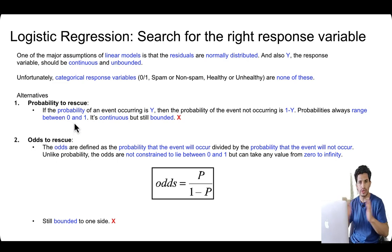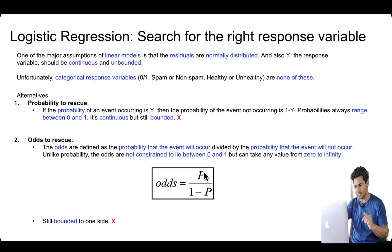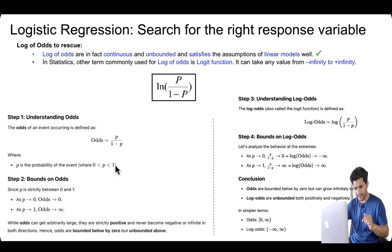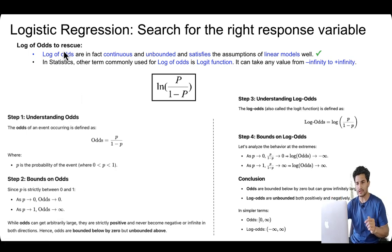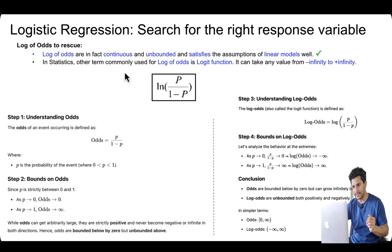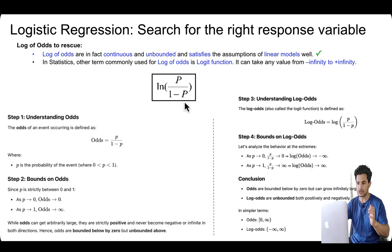The next option is odds, defined as the probability the event occurs divided by the probability it won't occur. The range of odds is zero to infinity: when probability is zero, odds are zero; when probability is one, one divided by zero tends to infinity. So odds are continuous and unbounded on the positive side, but still bounded on the negative side. That's where log of odds comes to the rescue — we can regress our features to predict the log of odds, which is log(p / (1 - p)), satisfying the condition of being continuous and unbounded.